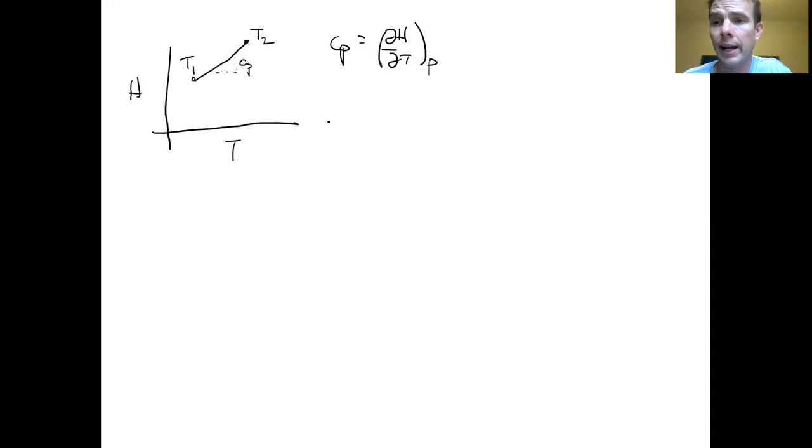And so, if I wanted to calculate the enthalpy at T2, you could just do some simple calculus and you'd end up with an expression like this. Actually, H at T2 is equal to H at T1 plus Cp delta T, right? That would give me the enthalpy at the second temperature.